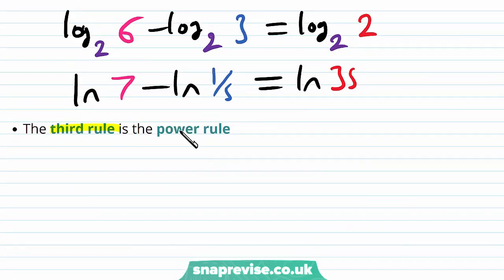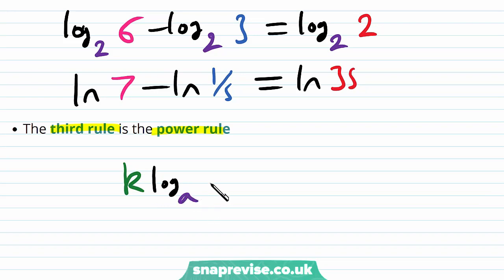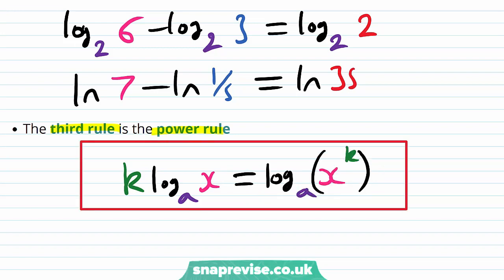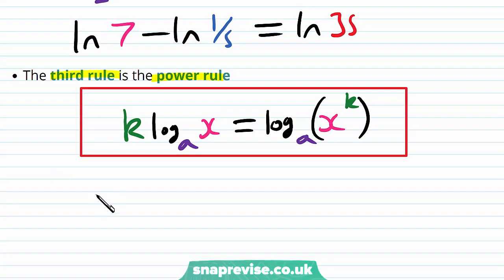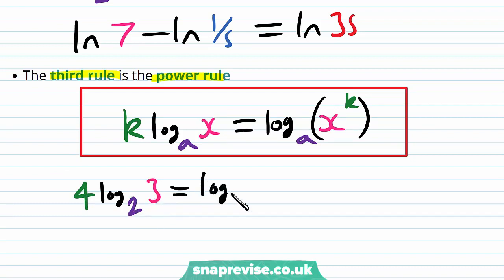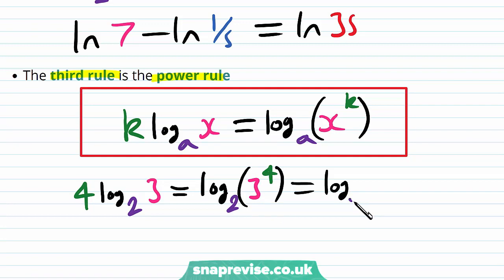The third rule is called the power rule. If we have a number k multiplied by the log base a of x, we can bring the k inside, and we get the log base a of x to the power of k. This is our power rule. And so for example, if we have 4 lots of log base 2 of 3, this is the same as the log base 2 of 3 to the power of 4, and therefore this is the same as the log base 2 of 81.